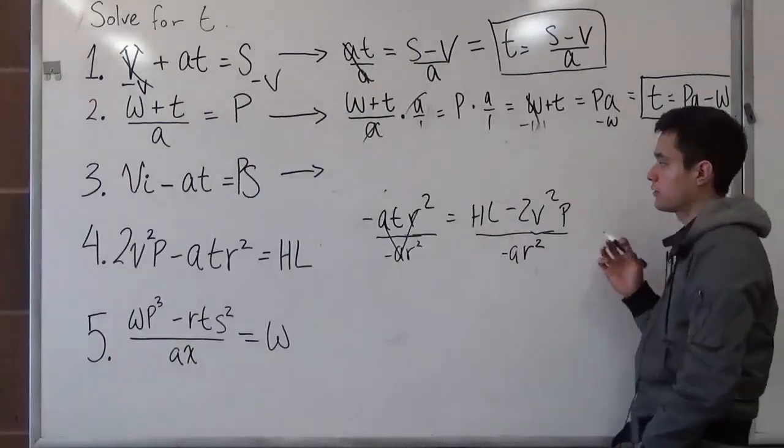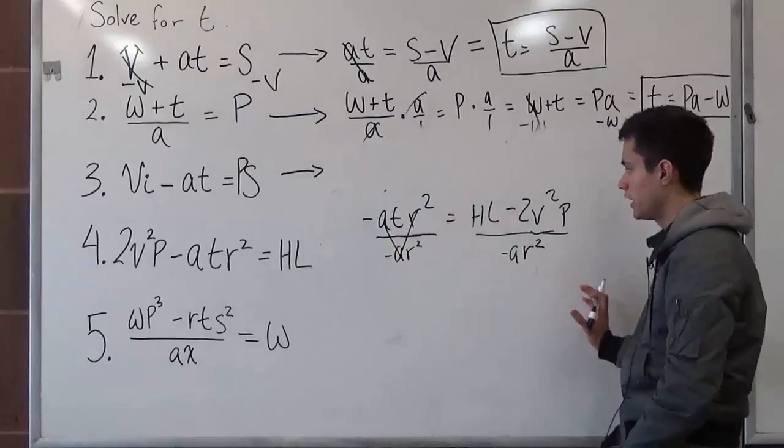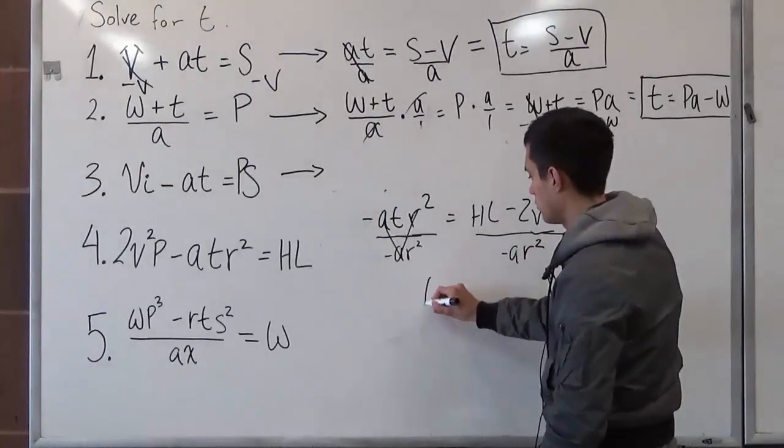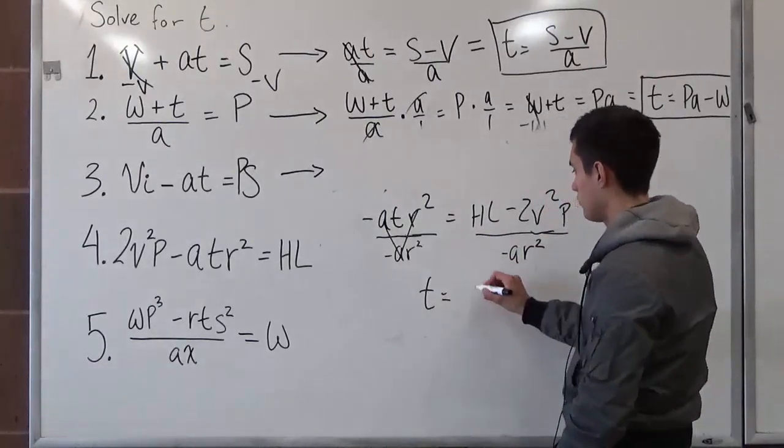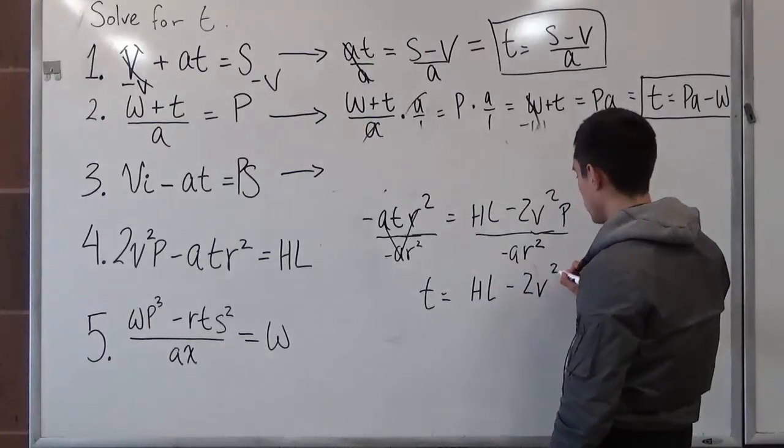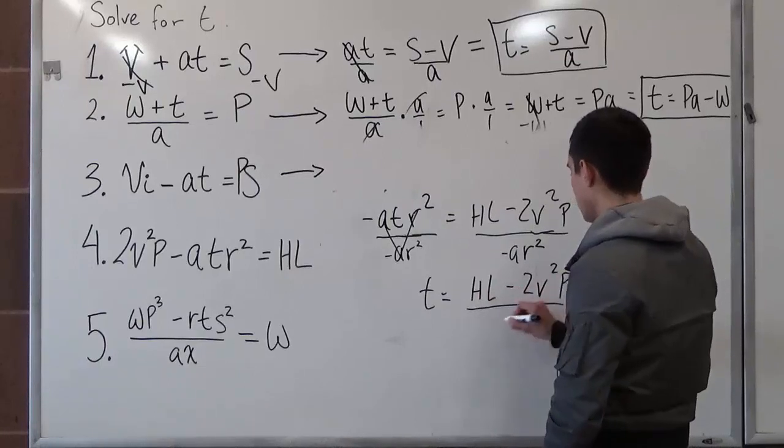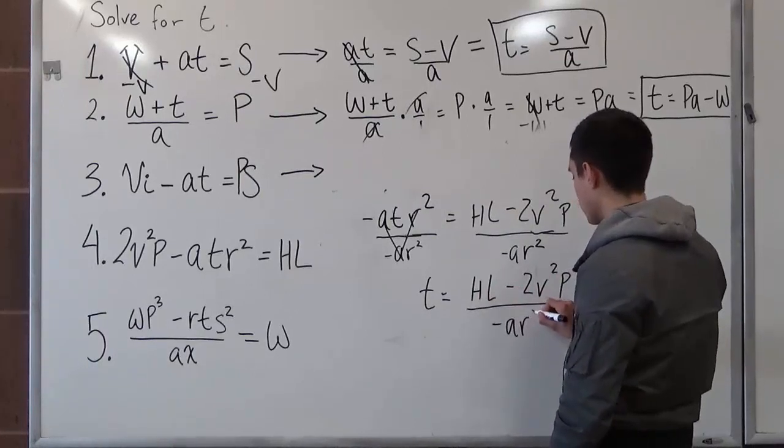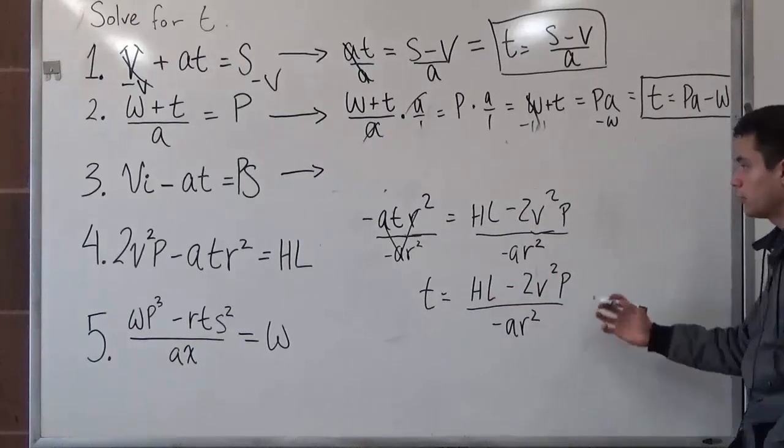So after we've canceled it out, as you can see here, we just have to rewrite it. So now, t is now by itself will equal to hl minus 2v squared p divided by negative ar squared. And that would be the final answer for 4.